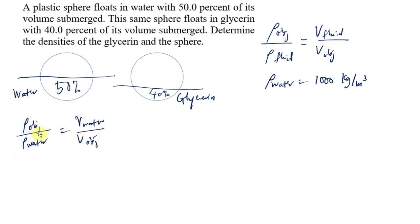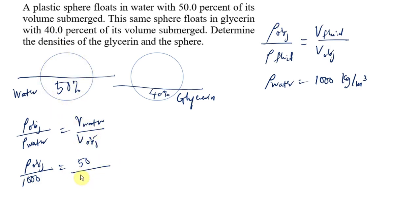Now we substitute the known values. We are solving for the density of the object. The density of water is 1,000 kg/m³. The volume of water displaced by the object is 50% of the total volume, and the total volume of the object is 100%. So the density of the plastic sphere equals 1,000 × (50/100), which gives 500 kg/m³.